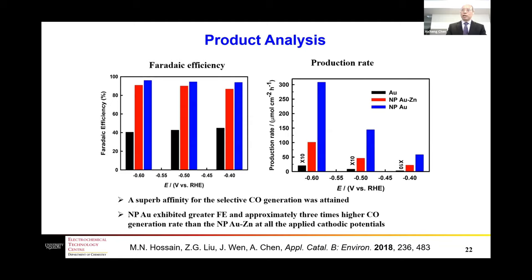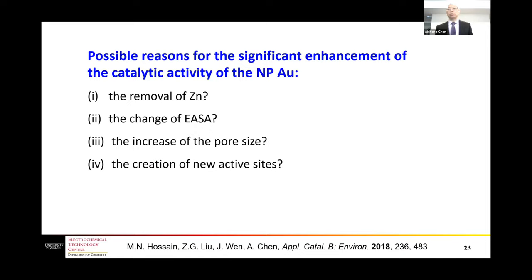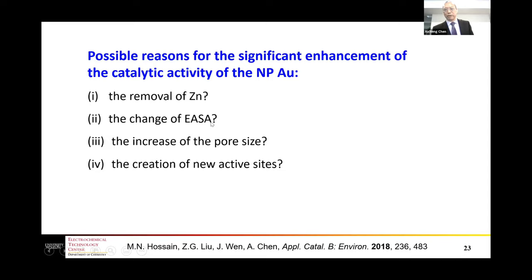Looking at production rate, with nanoporous gold the activity is much higher — the smooth gold rate was so small it had to be enlarged by 10 times for comparison. We then asked: what are the possible reasons for the significant enhancement of nanoporous gold for CO2 reduction? We identified likely four reasons: (1) removal of zinc, (2) change in electrochemically active surface area, (3) increase in pore size, and (4) creation of new active sites during acid treatment.